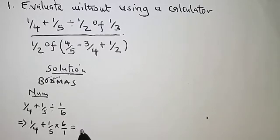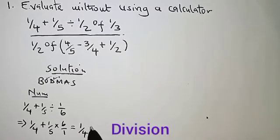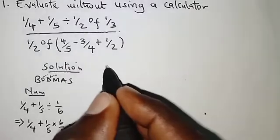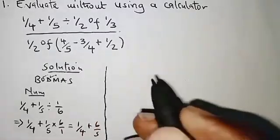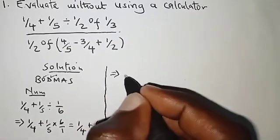That should give us one quarter plus six over five. The LCM here is 20, so we have 4 into 20, 5 by 1 is 5.